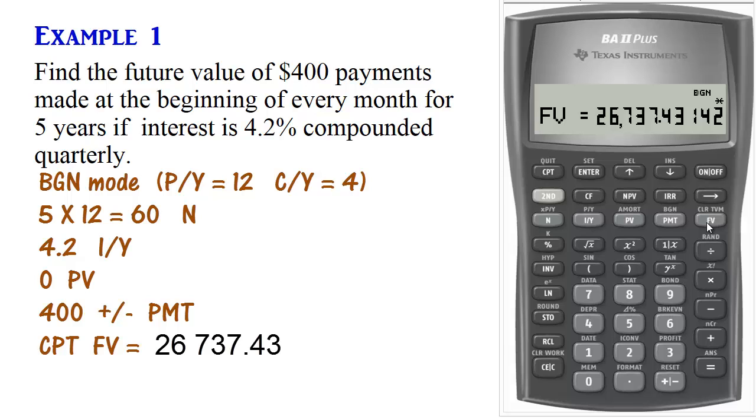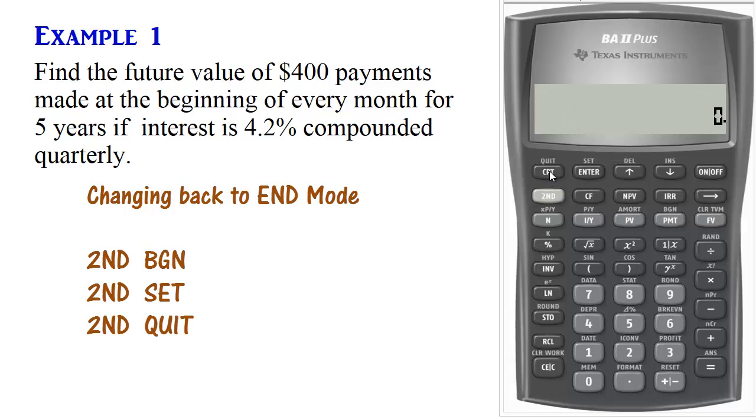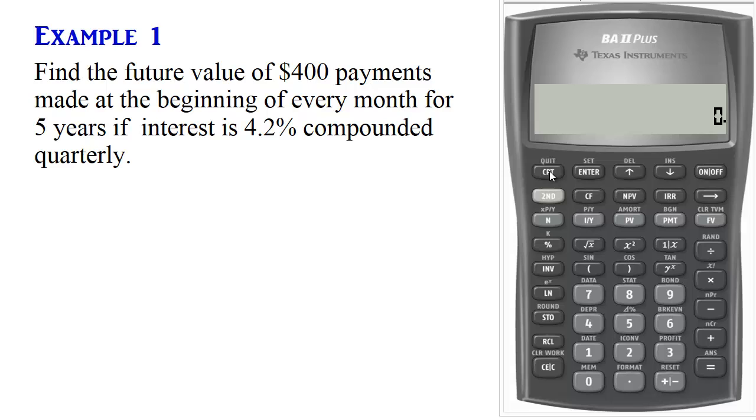And that's how to use the BA2 Plus for annuity due calculations. To set your calculator back to End Mode, just follow the same process again. 2nd, Begin, 2nd, Set. See now it's in End Mode. 2nd, Quit. And now the BGN is no longer on screen, which means you are now in End Mode.